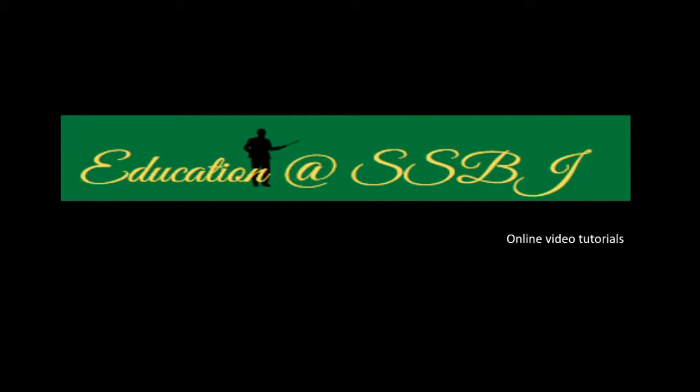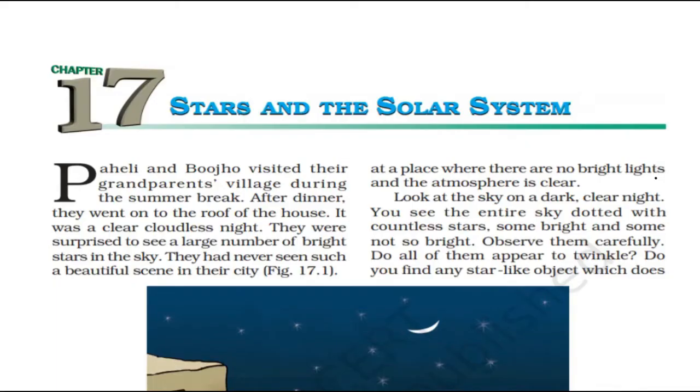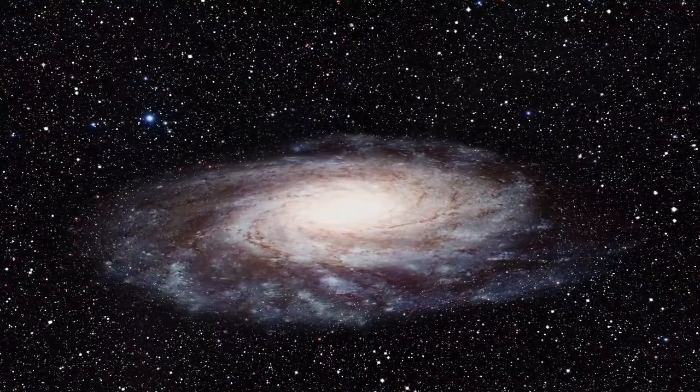Hello and welcome to Education at SSBJ Online Video Tutorials. We are into Chapter No. 17, Stars and the Solar System of Class 8, CBSE. In the previous video tutorial, we have learned the meaning of celestial objects or we can call them as heavenly bodies. And what are the members of this group?